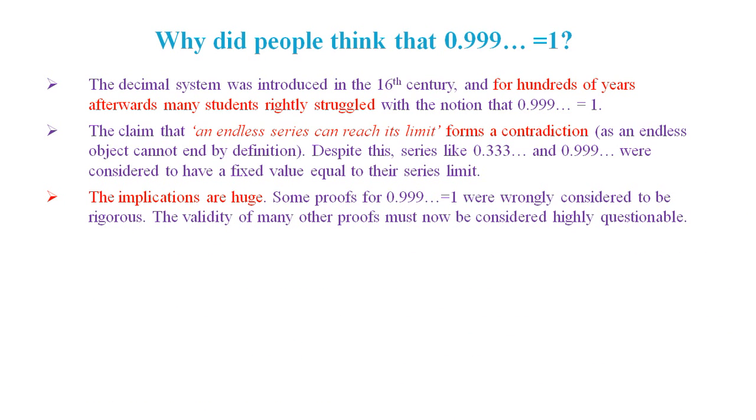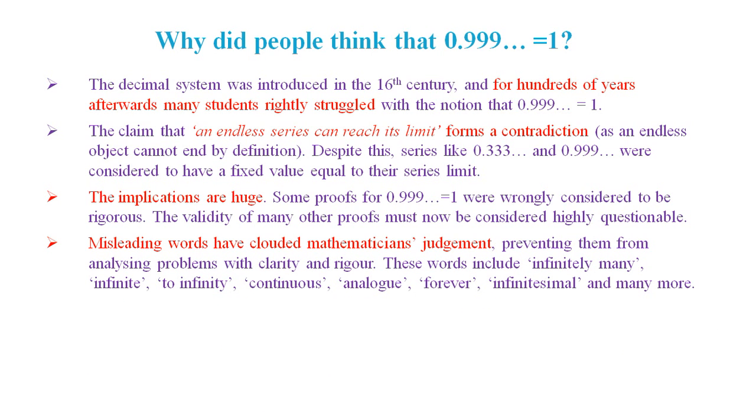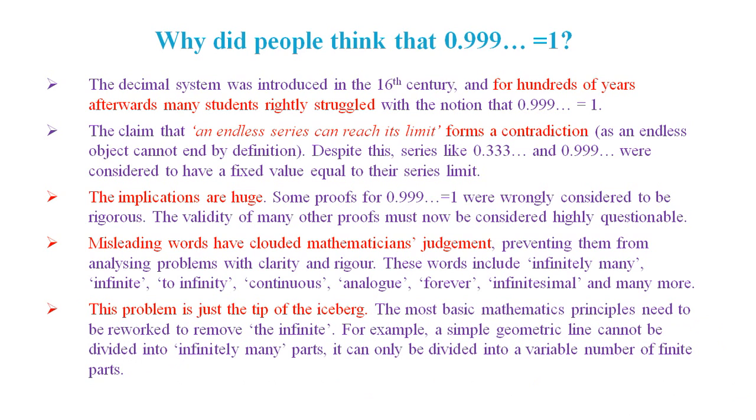The implications of this mistake are huge. Some proofs for 0.9 recurring equals 1 were wrongly considered to be rigorous. The validity of many other proofs must now be considered highly questionable. But why didn't mathematicians pick up on this problem before? Well, misleading words have clouded mathematicians' judgment, preventing them from analyzing problems with clarity and rigour. These words include infinitely many, infinite, to infinity, continuous, analogue, forever, infinitesimal, and many more. This problem is just the tip of the iceberg. The most basic maths principles need to be reworked to remove the infinite. For example, a simple geometric line cannot be divided into infinitely many parts. It can only be divided into a variable number of finite parts.